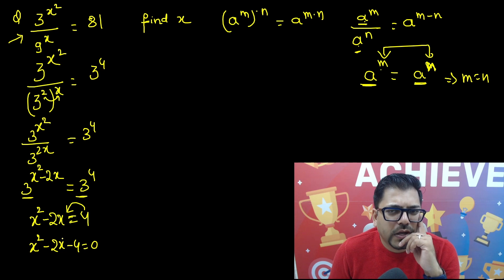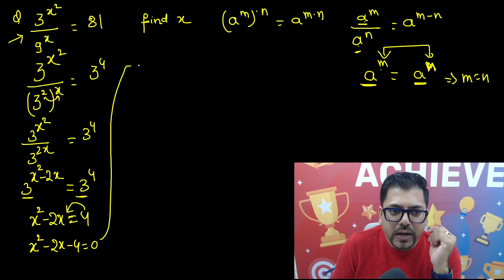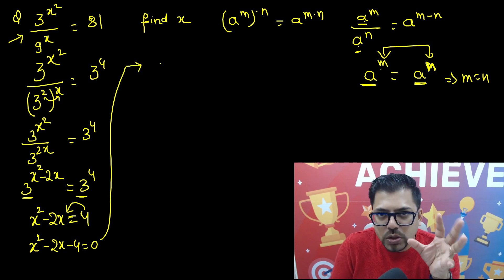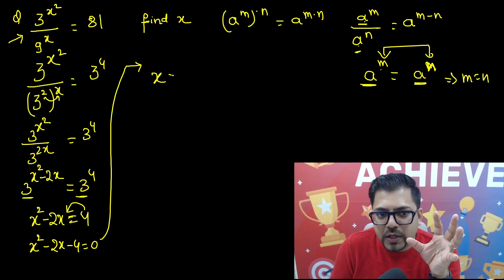Now from here, how will you get the answer? So again, here instead of finding the middle term splitting, let's do the quadratic formula. For those who don't know the quadratic formula, you can find the roots using the formula x equals to minus b plus minus root under b squared minus 4ac upon 2a.